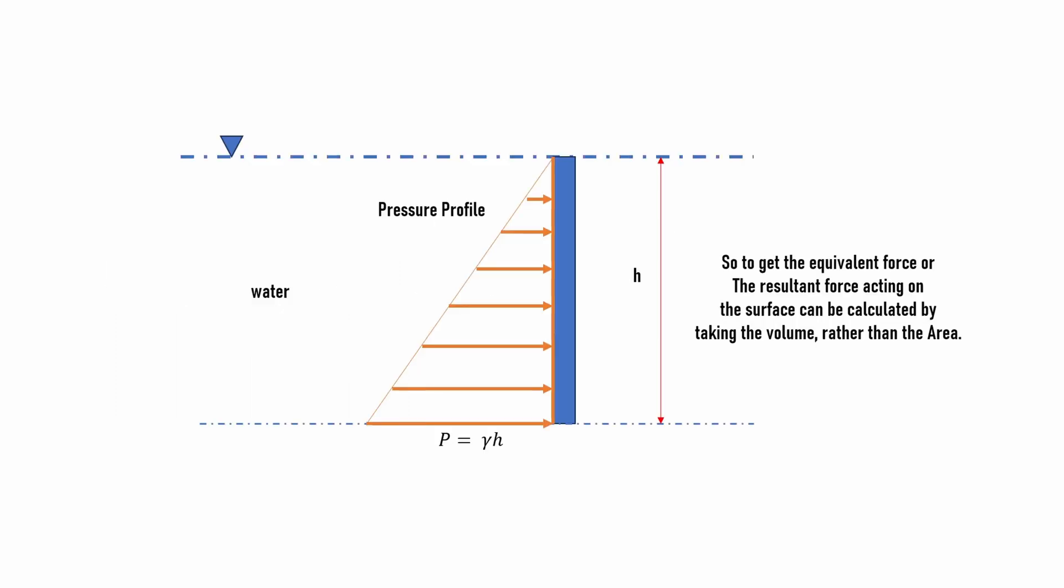In order to get the equivalent force or the resultant force acting on the surface, we need to consider the overall volume created by this pressure profile. So we will be working with the 3D profile of the pressure. That means it will no longer look like a triangle but will look like a prism. If we can measure the volume of this wedge or triangle-like prism, we will be able to find the equivalent force for this particular problem.